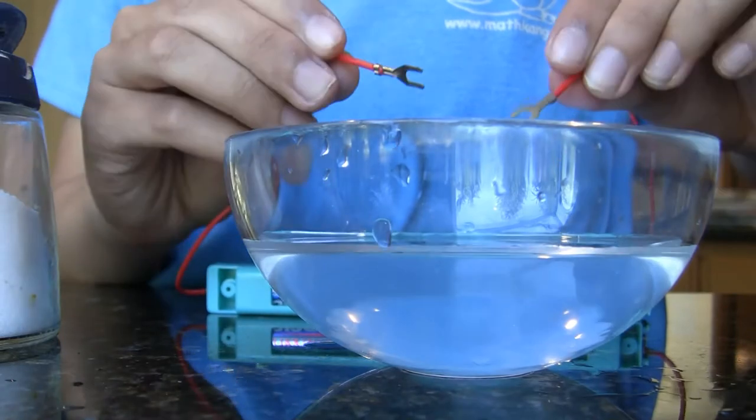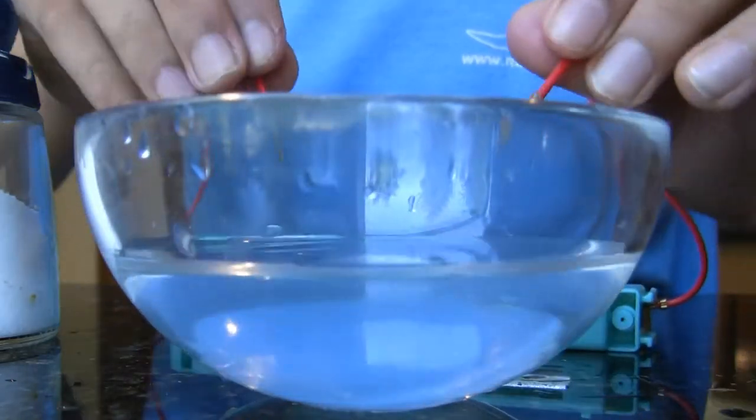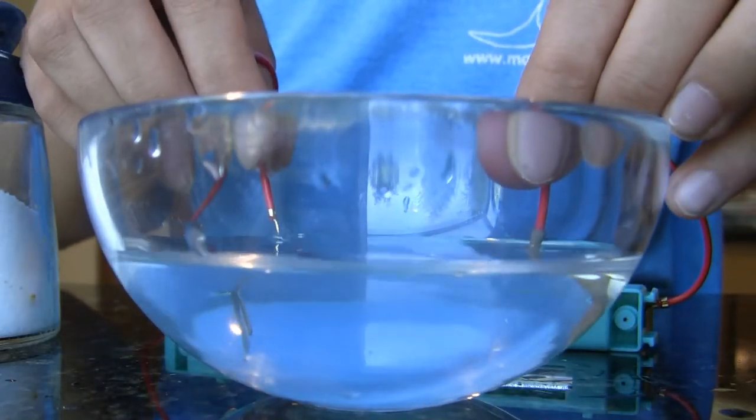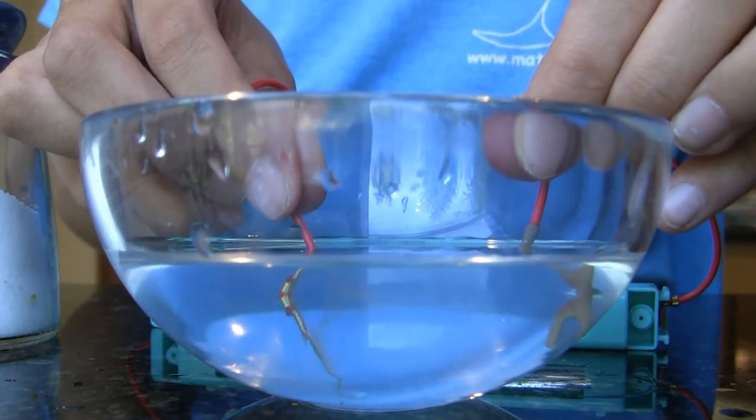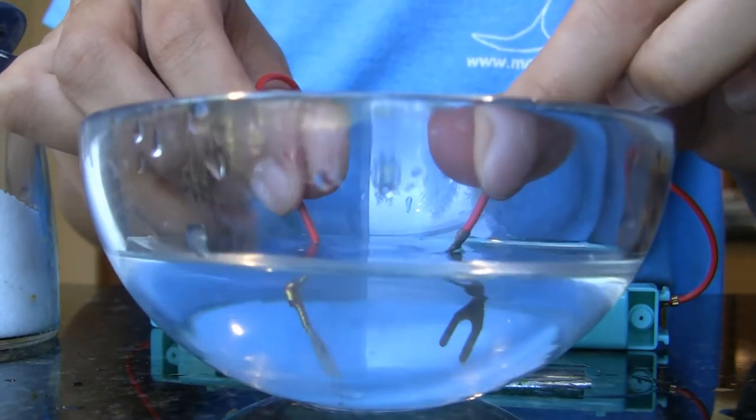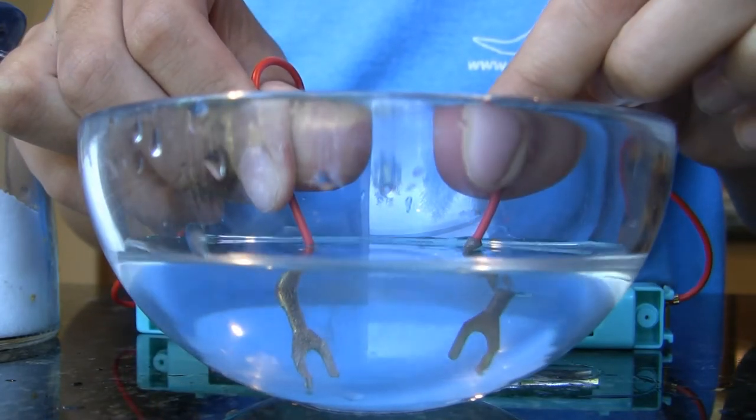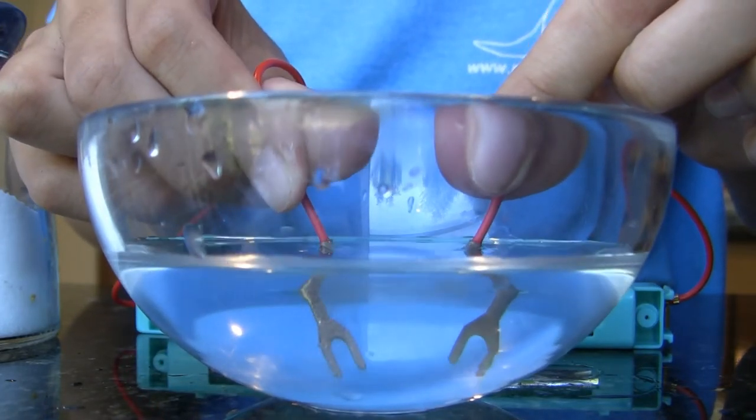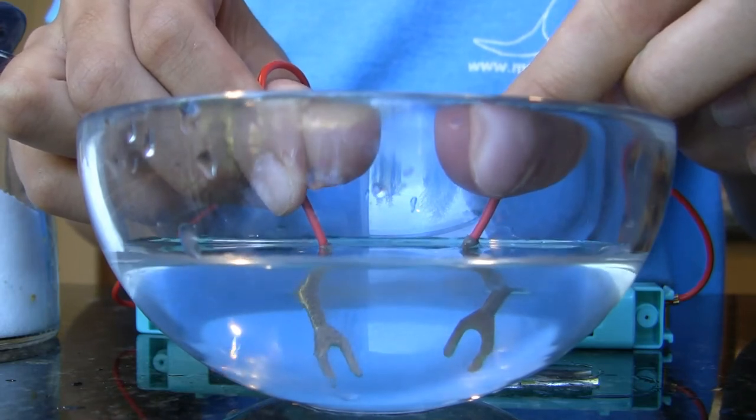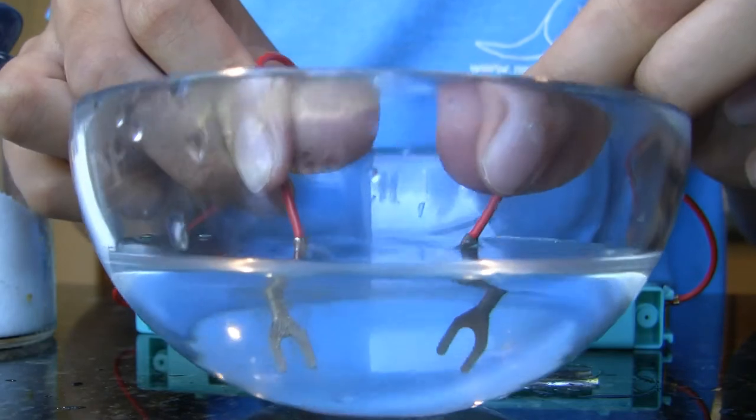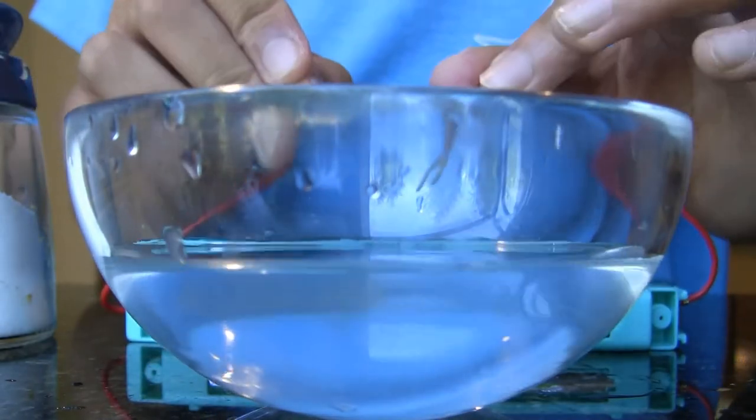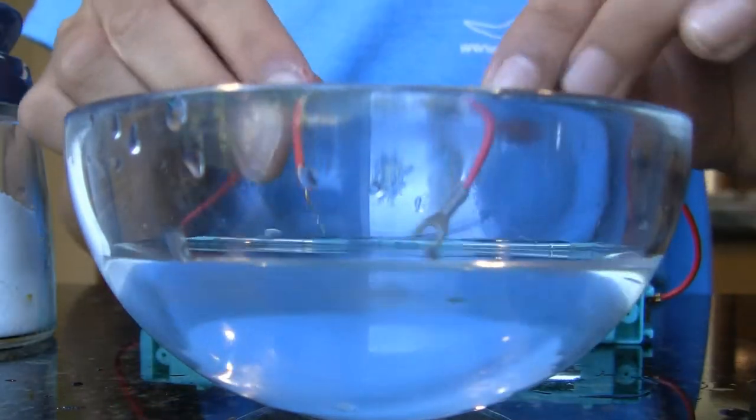you take the two wires and stick them inside. And you can see that one of my wires is bubbling while the other wire is not. It's not that these are two different wires. These wires are made of the same material.